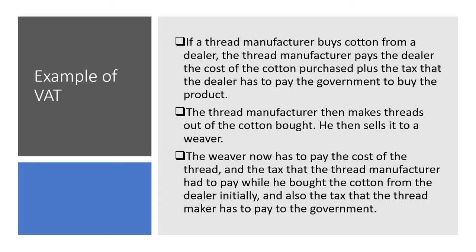Now let's understand it with the help of an example. There is a thread manufacturer who buys cotton from the dealer. The thread manufacturer pays the cost of the cotton to the dealer along with the tax — that is, cost of the cotton plus the tax that the dealer has to pay to the government. Next, the thread manufacturer makes thread out of the cotton and sells it to a weaver. The weaver then pays the cost of the thread along with the tax that the thread manufacturer will pay to the government. At every stage the tax is being paid — this is the example of VAT.